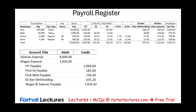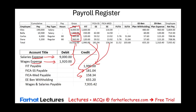Now let's look at the journal entry. We debit salaries expense $9,000 for salaried employees and debit wages expense $1,920 for hourly employees, totaling $10,920 in expense. We then credit FICA Social Security payable $181.04, credit FICA Medicare payable $158.34. Debit expense on one side, credit payable on the other.